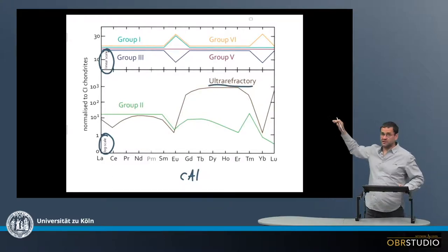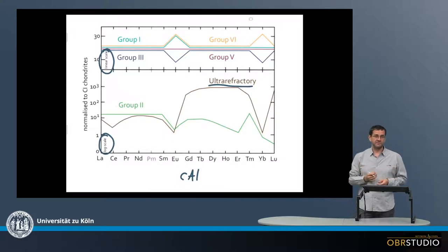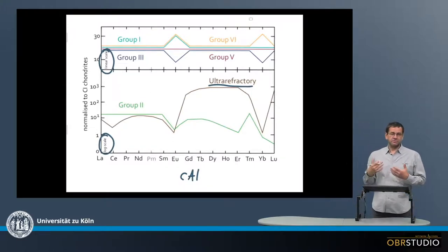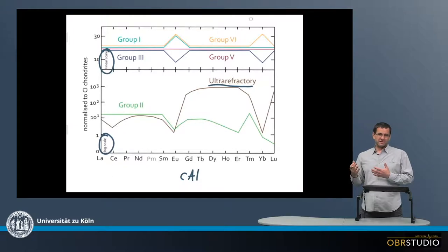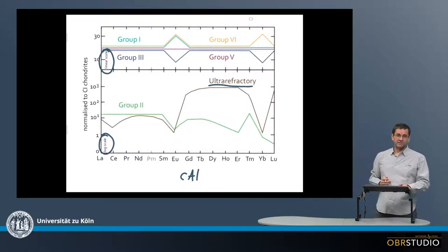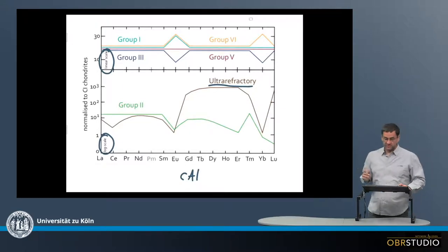Let's start with the upper part. There are four patterns, and first of all, all the patterns are enriched, including these from the lower part. All patterns are always enriched by about a factor of at least 20 times CI chondrites. Rare earth elements in CAIs are always quite abundant, quite enriched, which makes sense because they're refractory, as are calcium and aluminum.